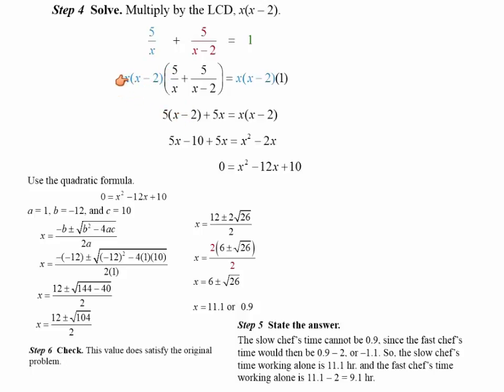Now the second term x minus two reduces to one. And then you get x times five. And the last term simply would have x times x minus two. So by multiplying each term by LCD, we can reduce this equation where we can easily solve for that.